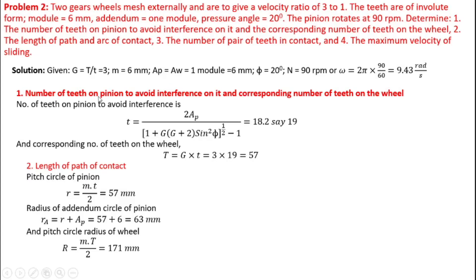First, we calculate the number of teeth on the pinion to avoid interference. Using the formula with AP, the module, and the gear ratio values, substituting all values we get 18.2, which rounds to 19 in whole number since teeth cannot be in decimal. Similarly, the corresponding number of teeth on the wheel: since G equals capital T divided by small t, capital T is calculated from this formula and this becomes 57.